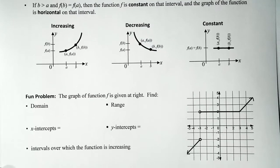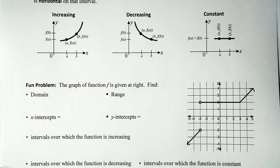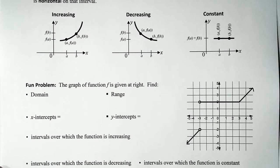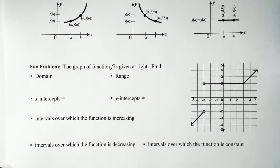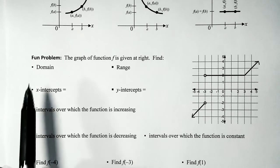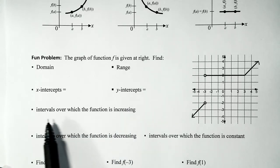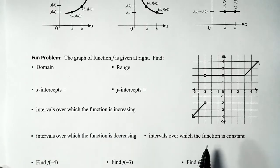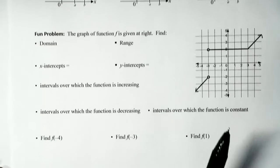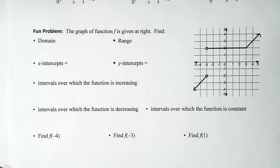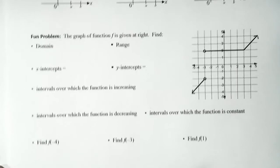Let's look at our problem. It says: the graph of a function f is given at right, and they want us to find the domain, range, x-intercepts, y-intercepts, intervals over which the function is increasing, decreasing, or constant, and to evaluate the function at negative 4, negative 3, and 1. It doesn't really matter which problem you answer first — just answer them.